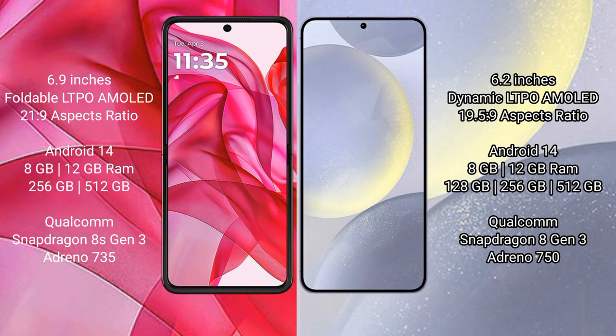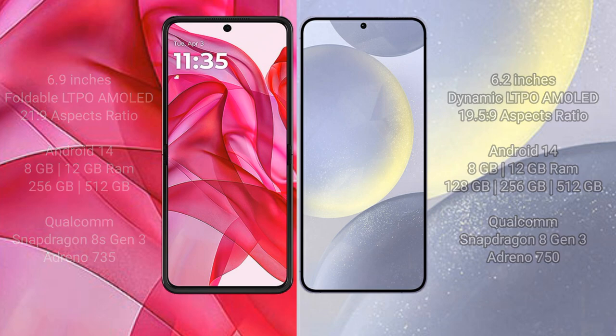The Samsung Galaxy S24 comes with 8GB or 12GB of RAM and 128GB, 256GB, or 512GB of internal storage. It is powered by the Qualcomm Snapdragon 8 Gen 3 processor.